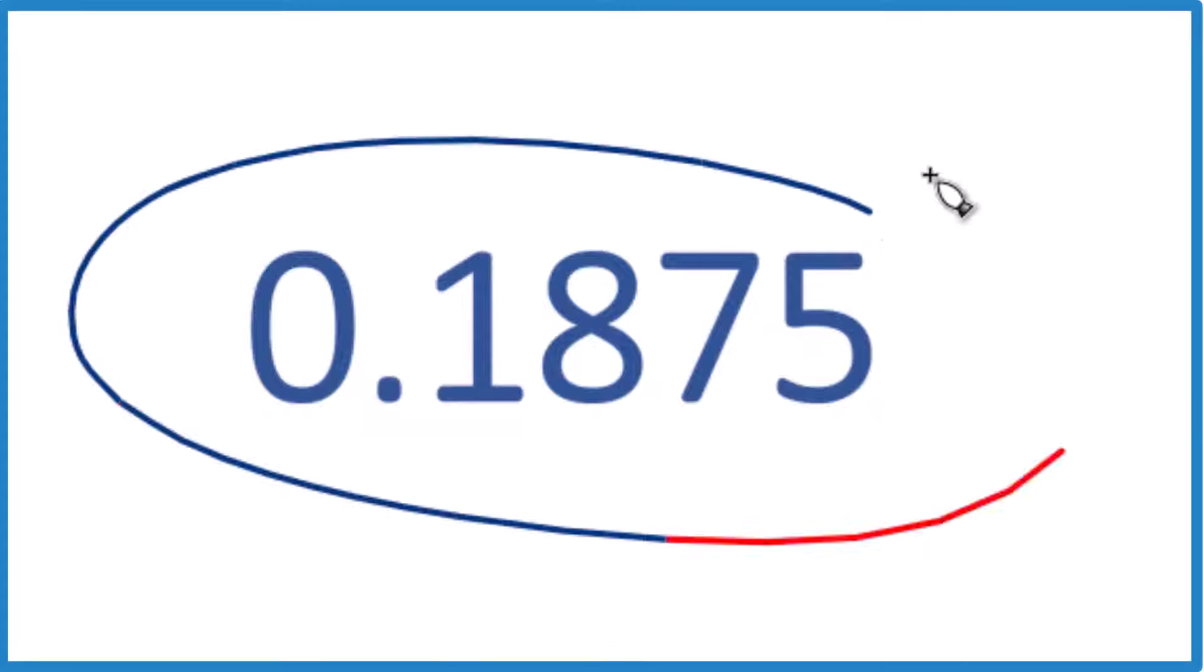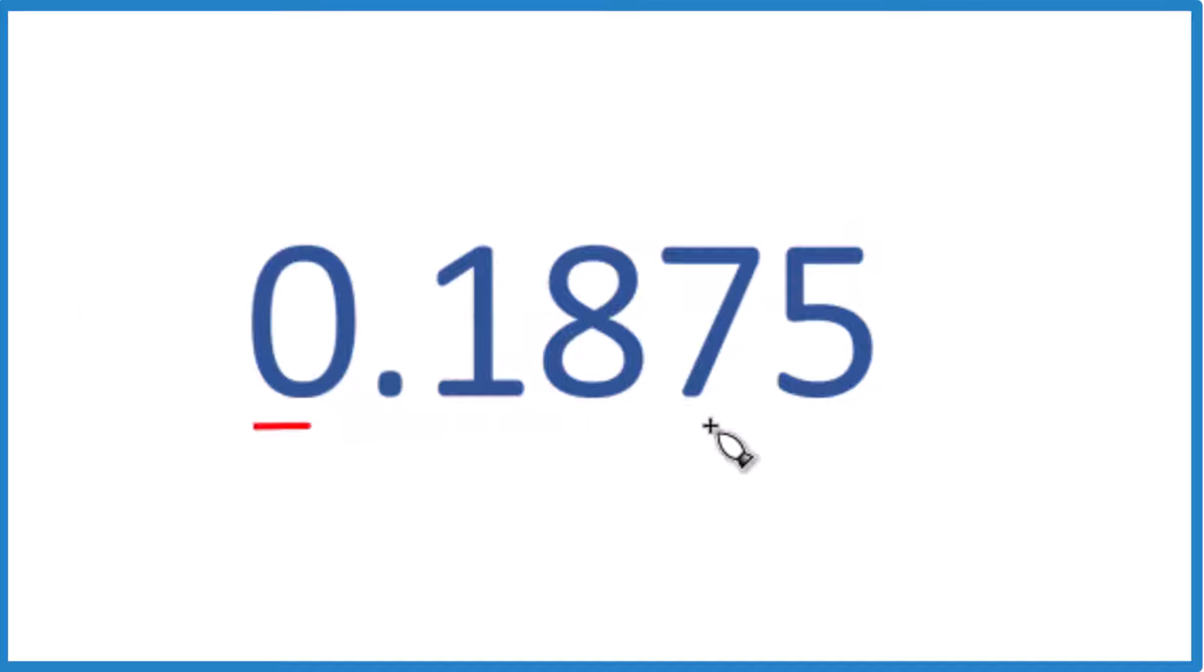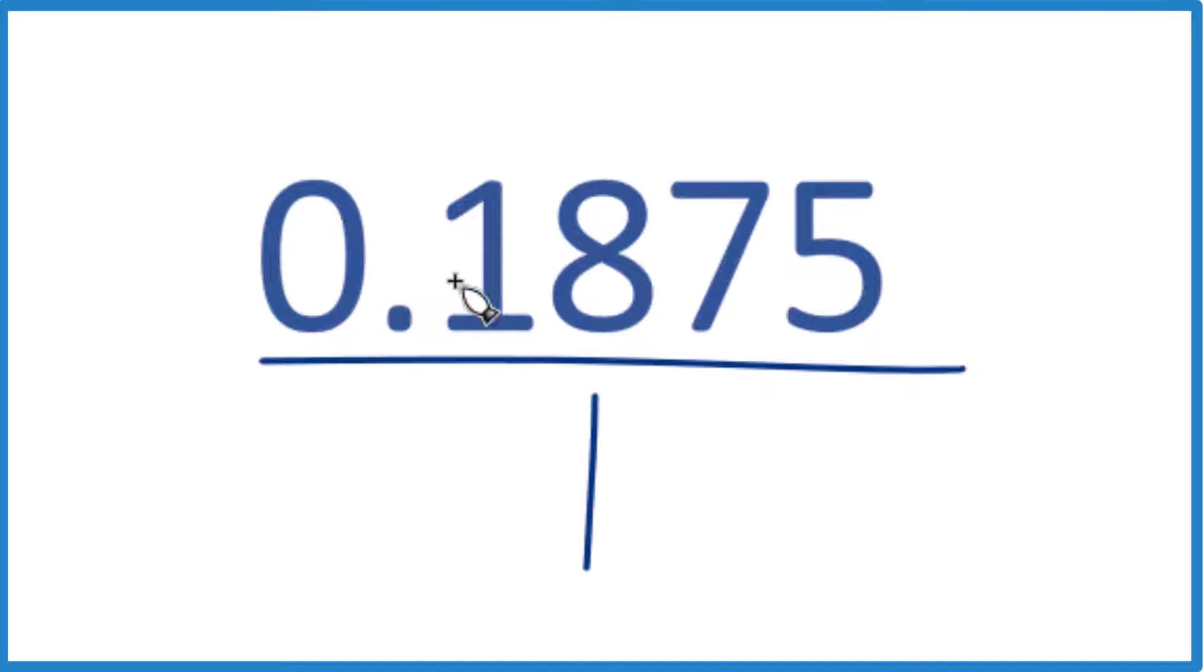Let's write the decimal 0.1875 as a fraction. First off, if we just put it over 1, it's still 0.1875. We're just dividing by 1. We have a fraction.